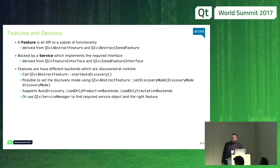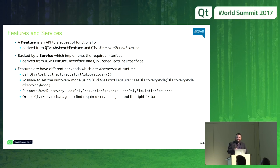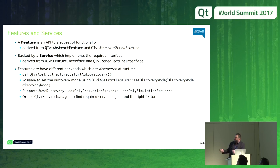In terms of classes to look for when you want to use Qt IVI to build your own integrations: QIVIAbstractFeature is the base class for front-end features like climate control. There's a derived class called AbstractZoneFeature, which is a feature that supports zoning. For example, climate control in many cars supports zones — you can set a separate target temperature for the driver seat, passenger seats, or rear seats. The principles of a feature having zones are implemented by the IVIAbstractZoneFeature derived class.